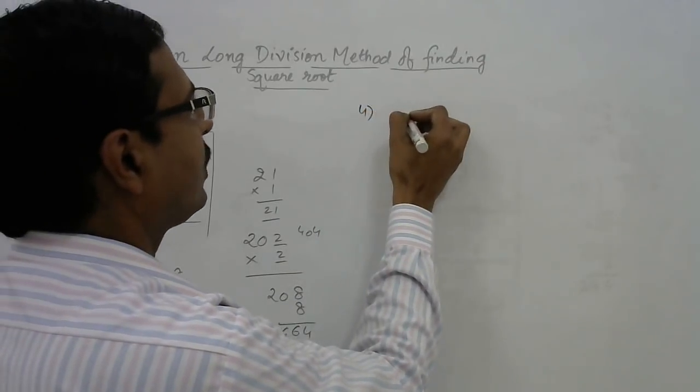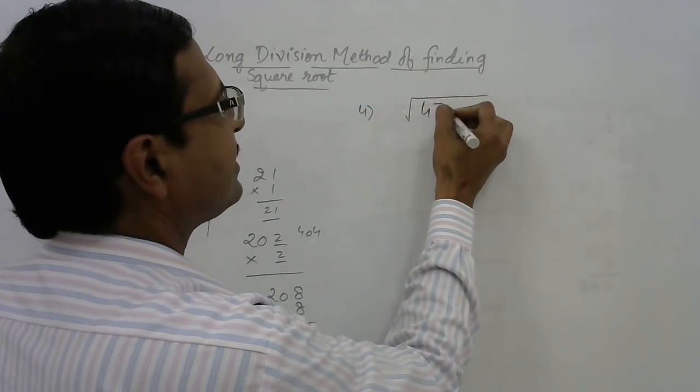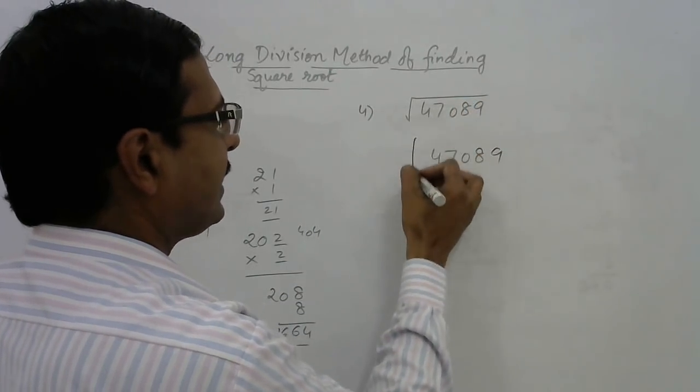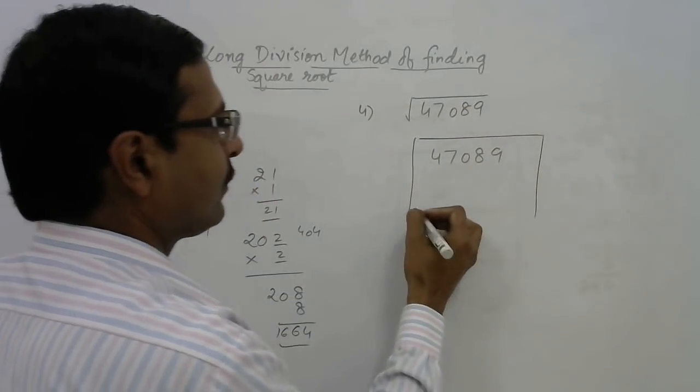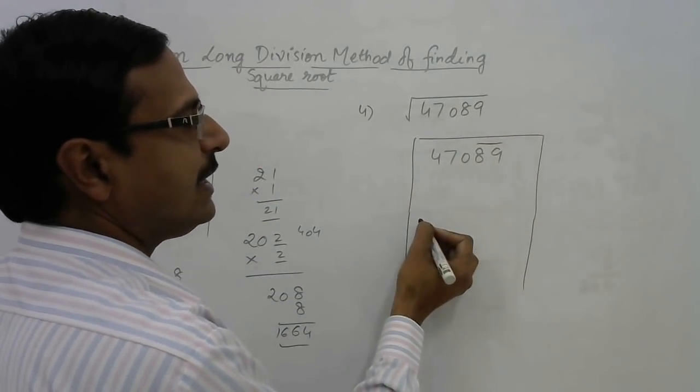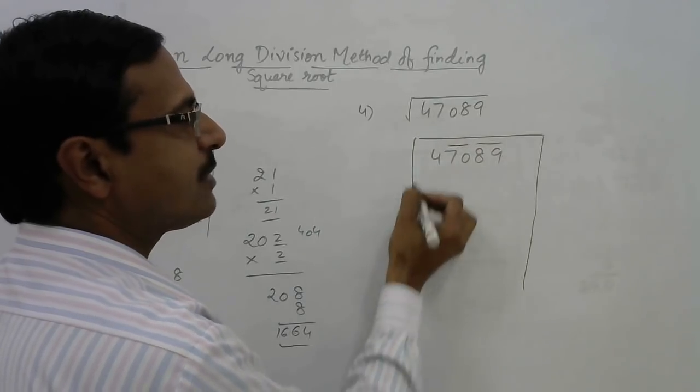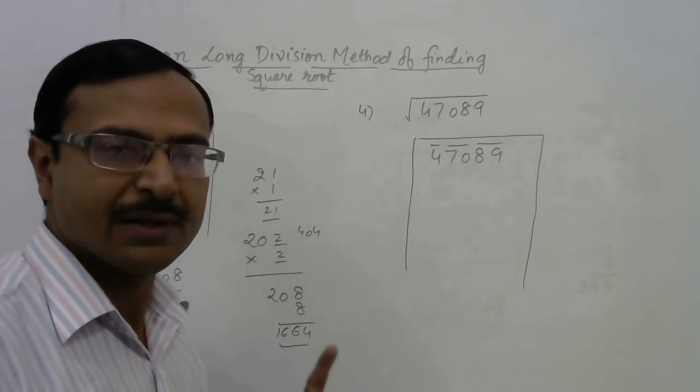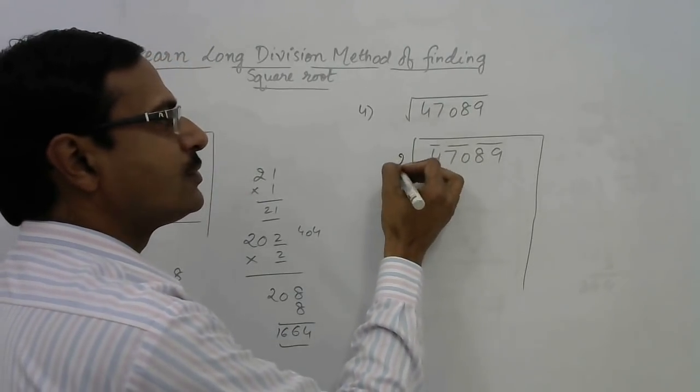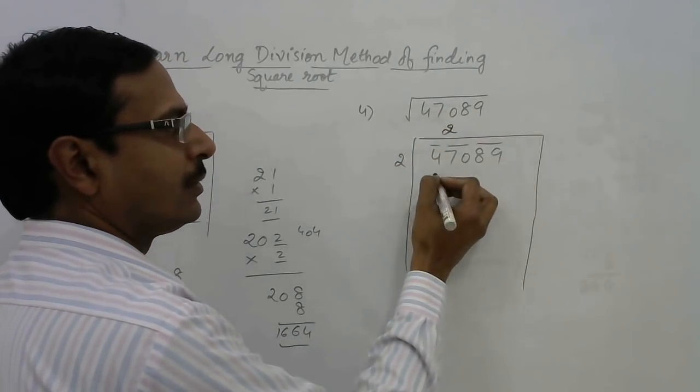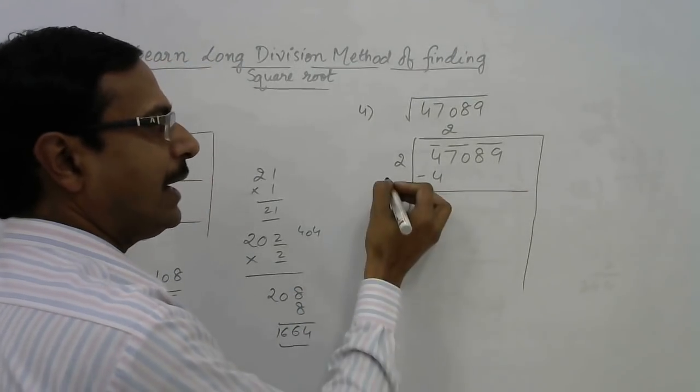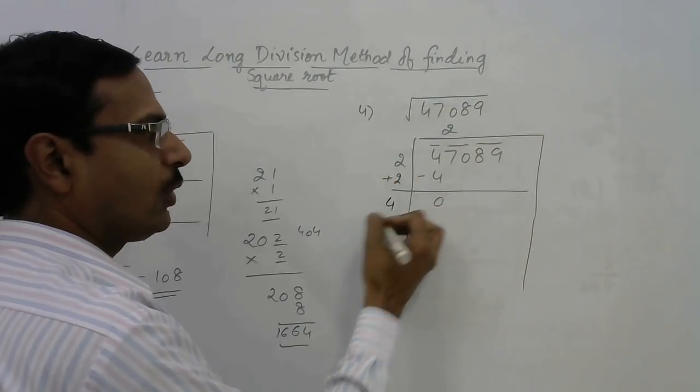I will write that in the division sign. Let us make pairs from the right hand side: 89 forms a pair, 70 forms a pair, and 4 remains single. 2 into 2 is 4, so we get to 4 like this. Subtract here, you get 0, and add this number here, you get 4.